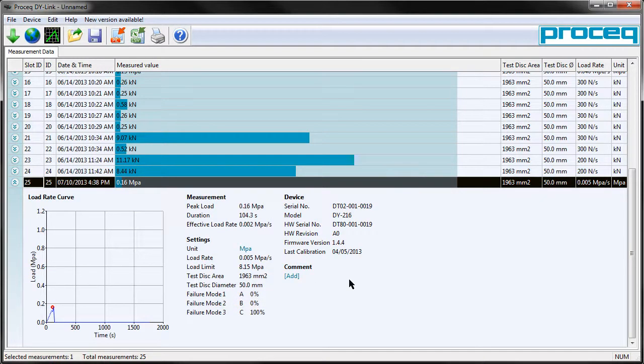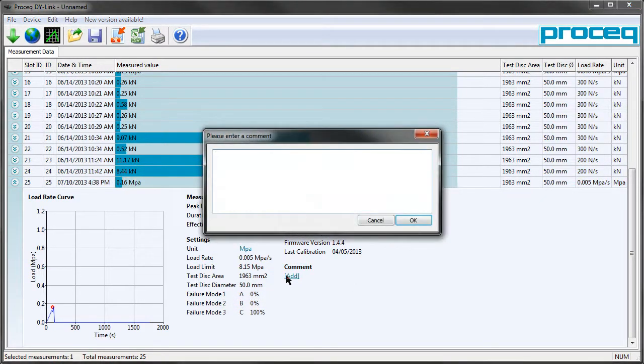Set that back to MPa if we want. And we can also add a comment to maybe keep track of where the test was taken or other information if you want to look at this data later.